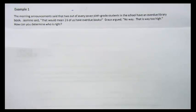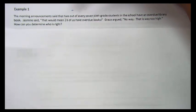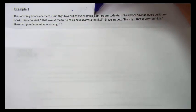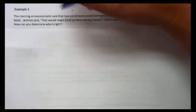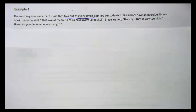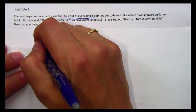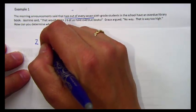If we want to find out whether Jasmine is right or Grace is right, we need to see if we can come up with an equivalent ratio to the ratio given in the morning announcements. The morning announcement said that two out of every seven sixth grade students. Two out of every seven. That's a key phrase for what we're dealing with ratios.